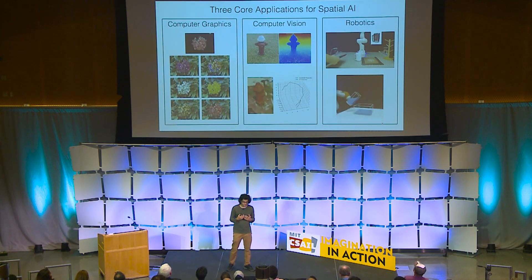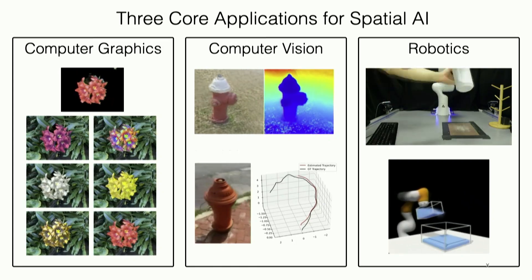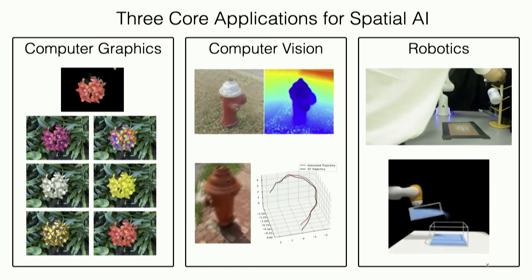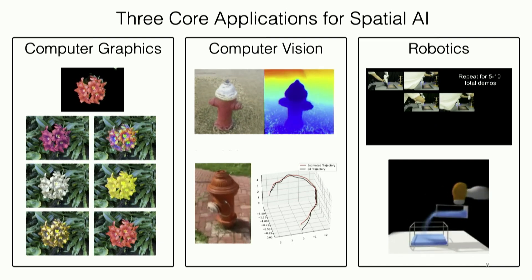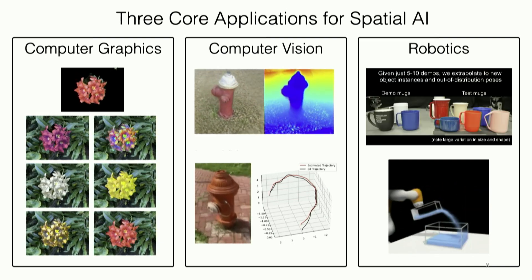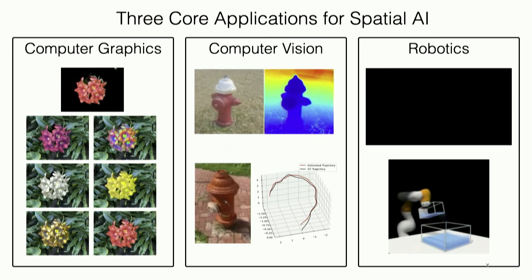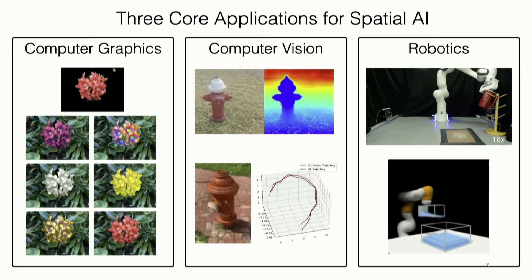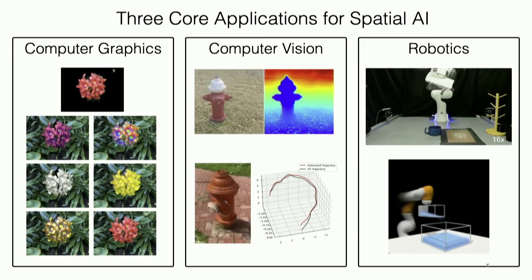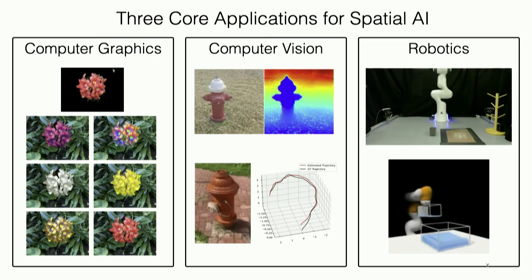Self-driving is just one example where this kind of technology can be useful. In general, there are three categories of applications. We have computer graphics, where we want to understand and build 3D models of the world so that we can interact and edit them to creatively express ourselves. We have computer vision, which is more like what the self-driving system needs — given observations, we want to build rich models of what's really going on in the scene. And we have robotics, where once we have some 3D understanding, we learn to plan and manipulate the world.